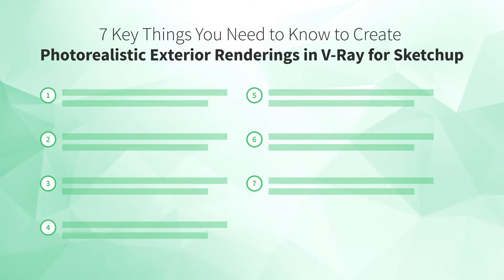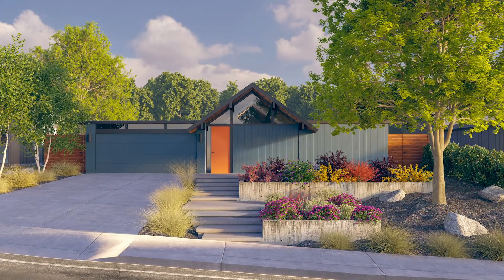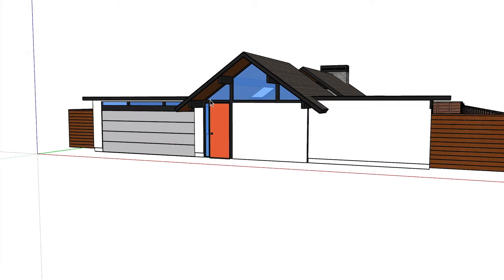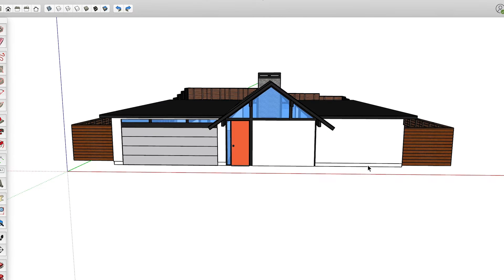We're ready to jump into our list of 7 key things. Starting with number one: compose your shot. The quality of your final rendering depends a great deal on how you compose your shot. For this video, let's focus on one of the most common views — a rendering that makes your client feel like they're experiencing your design firsthand. The mistake I see all too often is that users position themselves in front of the model but end up with a view that's about 10 to 20 feet in the air, which makes the whole composition feel unnatural.